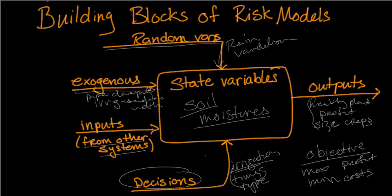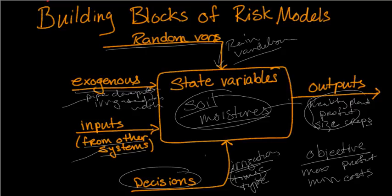But these building blocks of models help to form the foundation and they'll even define then later on how we build these equations. So we're going to build an equation for soil moisture that's a function of pipe diameter and the runoff from other systems and our irrigation system and the rain. We're going to form another function that describes the relationship between the outputs and these state variables, and maybe some of the inputs themselves, and a relationship between those outputs and the objectives.